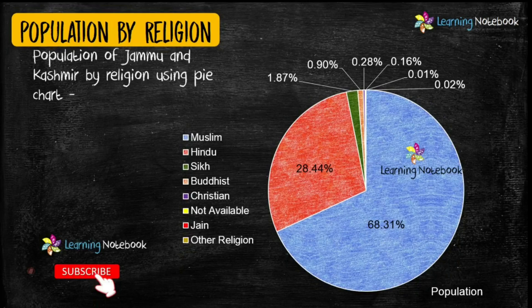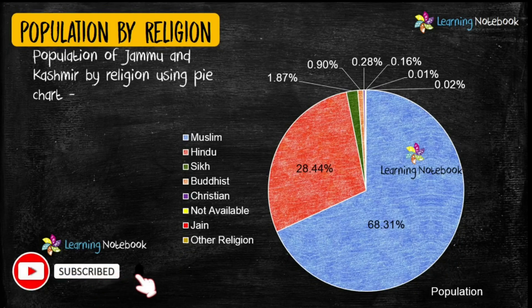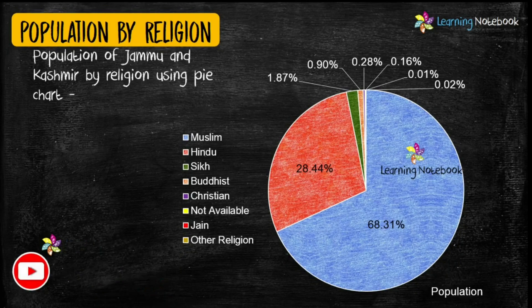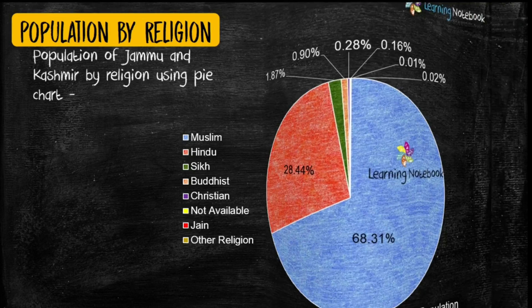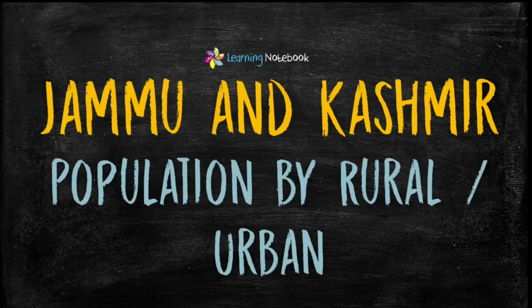Students, a pie chart is another beautiful way of representing the given data. So you may use a pie chart to depict population of Jammu and Kashmir by religion, as shown here.